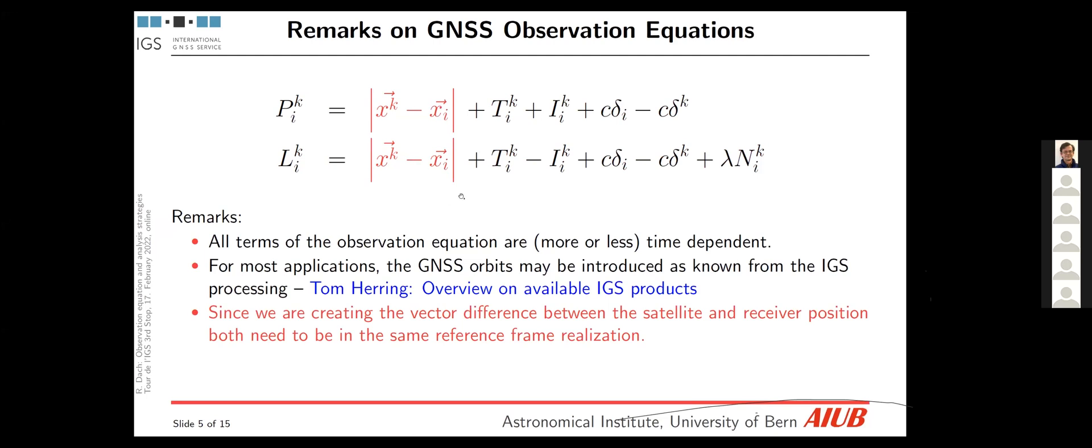So if we go further to the station coordinates, then we see that we form, in fact, a vector difference. And from the mathematics, it is clear that both vectors have to join the same coordinate systems. But sometimes in the applications, we forget about this. And that's why it's an important point to remember that the orbits and the ground stations have to be consistent in the same reference frame. And what does it mean in particular for local and regional applications will be introduced by Sonja Costa on the example of the SIRGAS, South American Network.